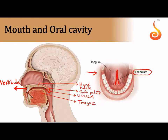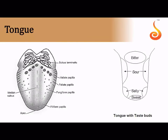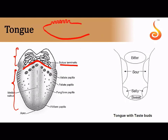Underneath the tongue there is a fold of mucous membrane connecting the tongue to the floor of the mouth, called the lingual frenulum. The tongue is a highly muscular organ. On the upper surface of the tongue, slightly behind the front region, there is a V-shaped groove called the sulcus terminalis. The area in front of it is the anterior part of the tongue, part of the buccal cavity; behind it is the posterior part.